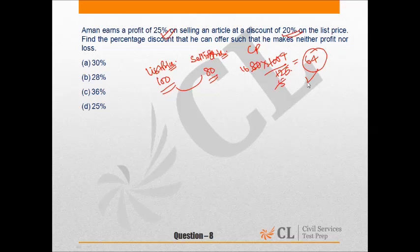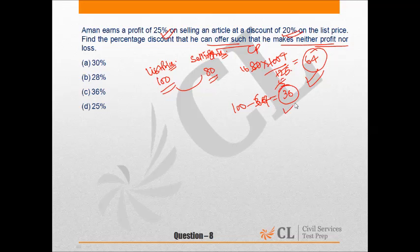We can say that the cost price of the article is Rs 64 and the list price is Rs 100. To find the percentage discount such that he makes neither profit nor loss, he would give a discount of 36%. Since the article is listed at Rs 100 and the cost price is Rs 64, a 36% discount means he makes neither profit nor loss. Hence our answer is 36%, which is option C.